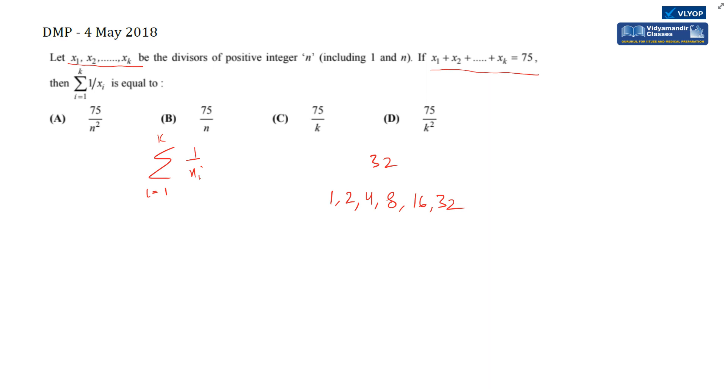The divisors of 32 are 1, 2, 4, 8, 16, 32. Now I'll look for a pattern.